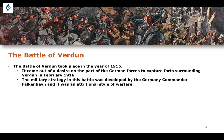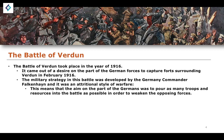The Battle of Verdun came out of a desire on the part of German forces to capture forts surrounding Verdun in February 1916. The German commander Falkenhayn wanted to utilise a military strategy of attritional warfare. What this meant was that the aim was to pour as many troops and resources into the battle as possible, accepting as many losses as needed to essentially weaken the opposing forces. The result is that many, many people die, but if you pour more and more forces into a battle, eventually one side will have to capitulate — and that was the attempt made at Verdun.